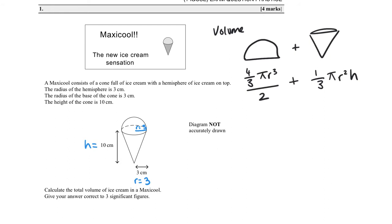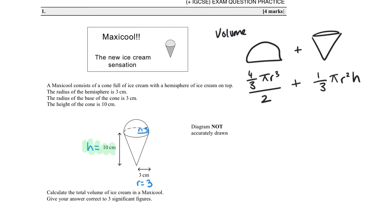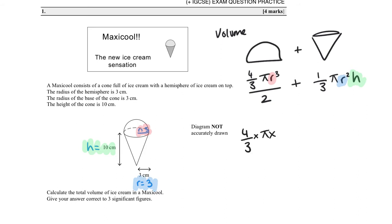Step four: match up everything we know. The height is 10, the radius of the hemisphere is 3, and the radius of the cone is also 3. We have all the information we need — no missing variables. Now it's just substitution.